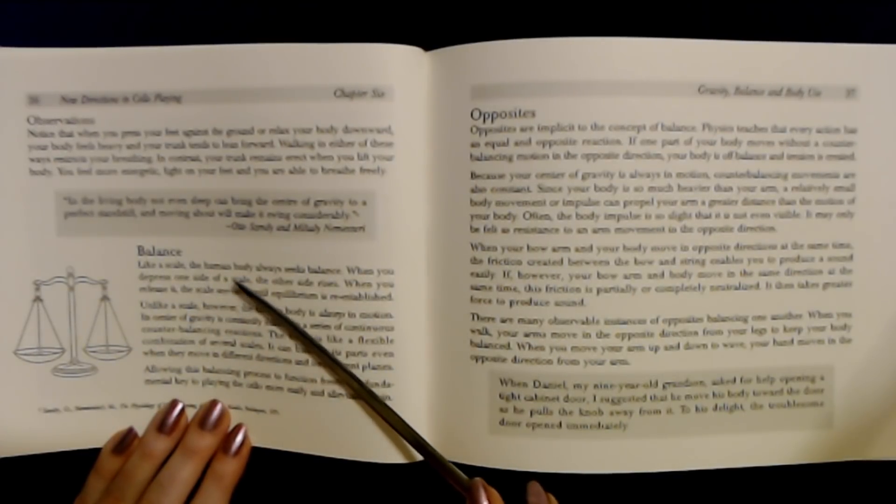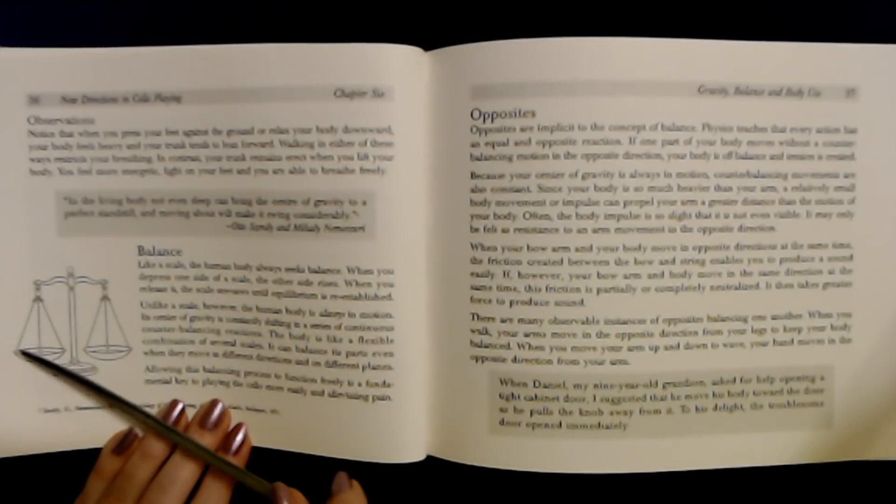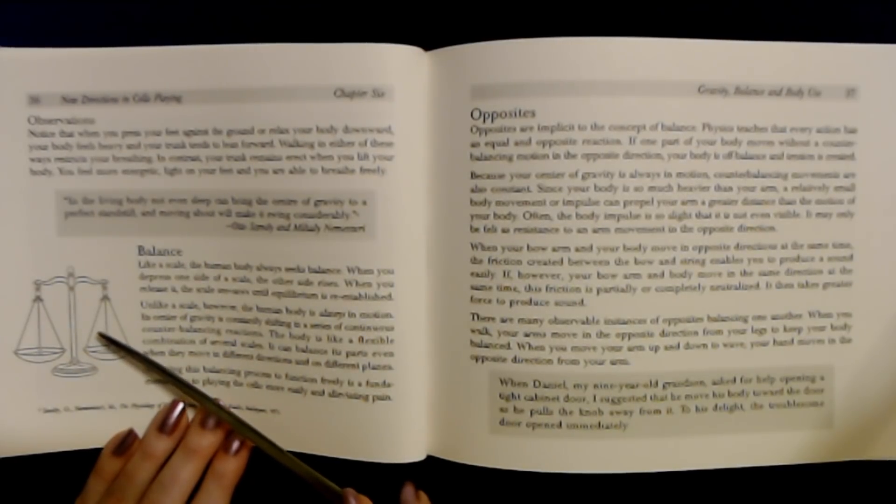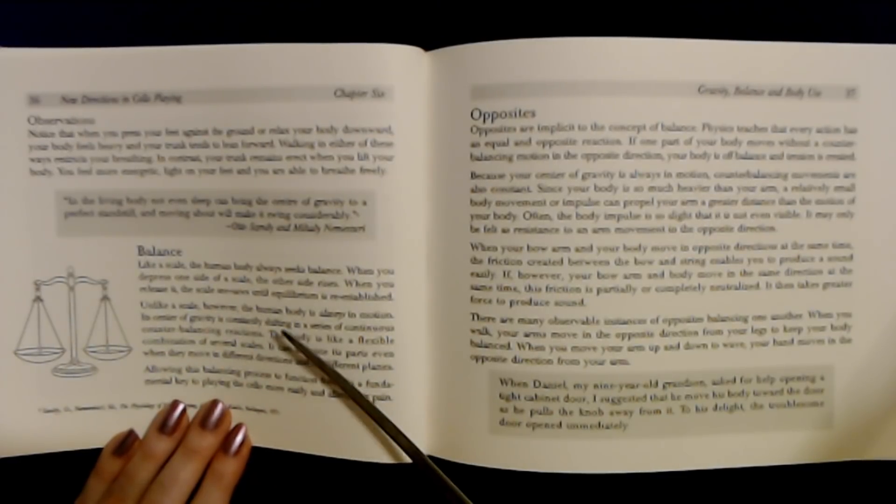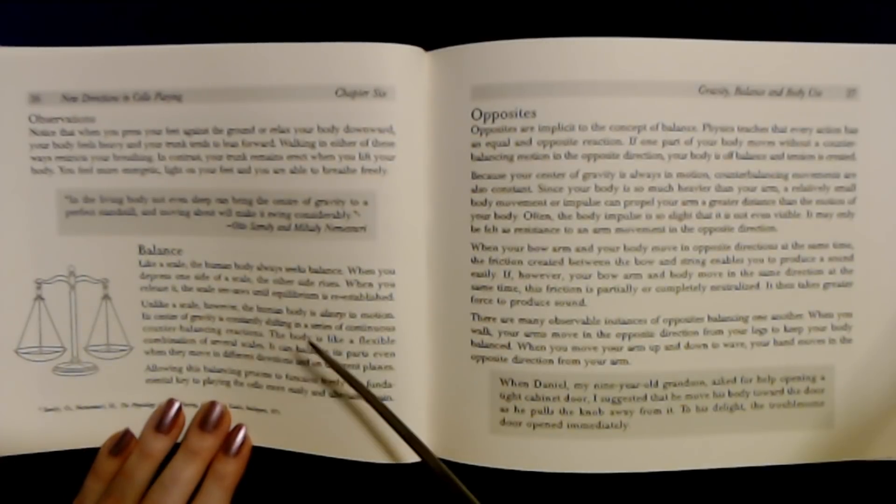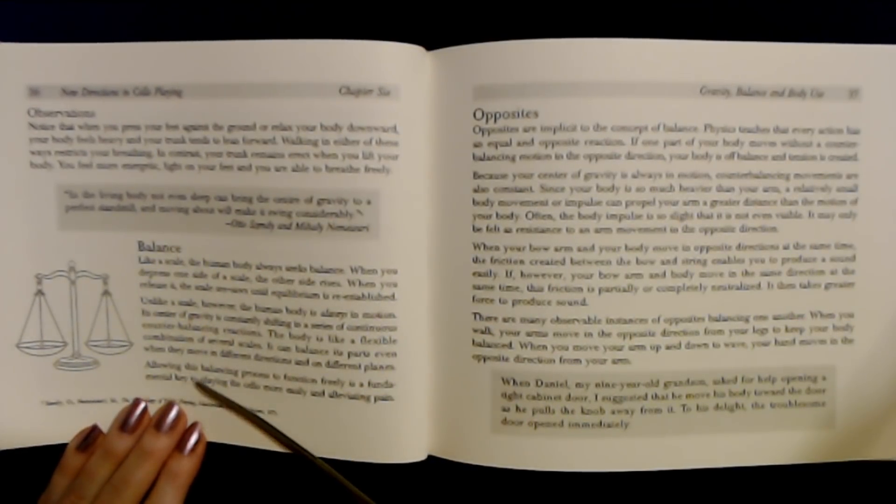Balance, like a scale. The human body always seeks balance. When you press one side of the scale, the other side rises. When you release it, the scale seeks equilibrium until balance is re-established. Like a scale, the human body is always in motion. It's constantly making continuous balancing reactions.